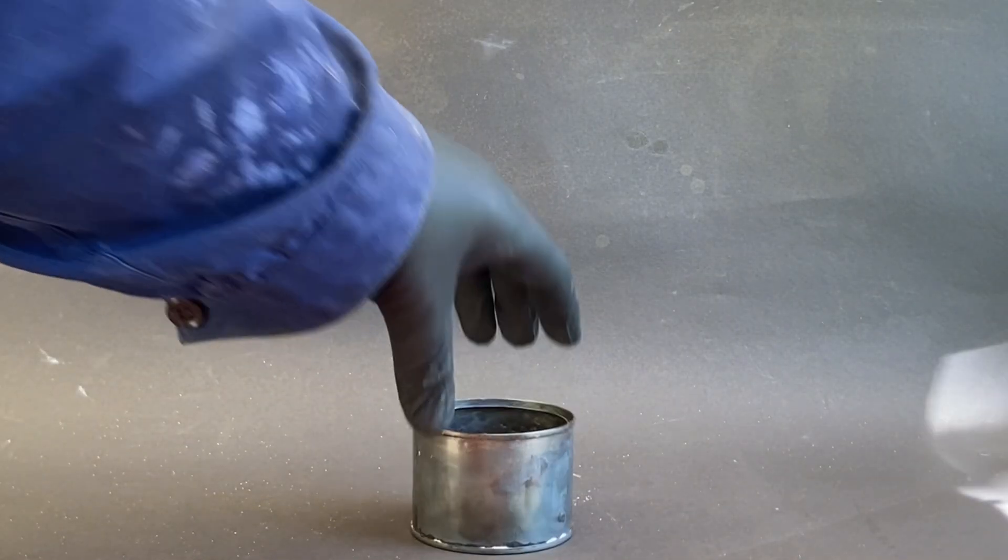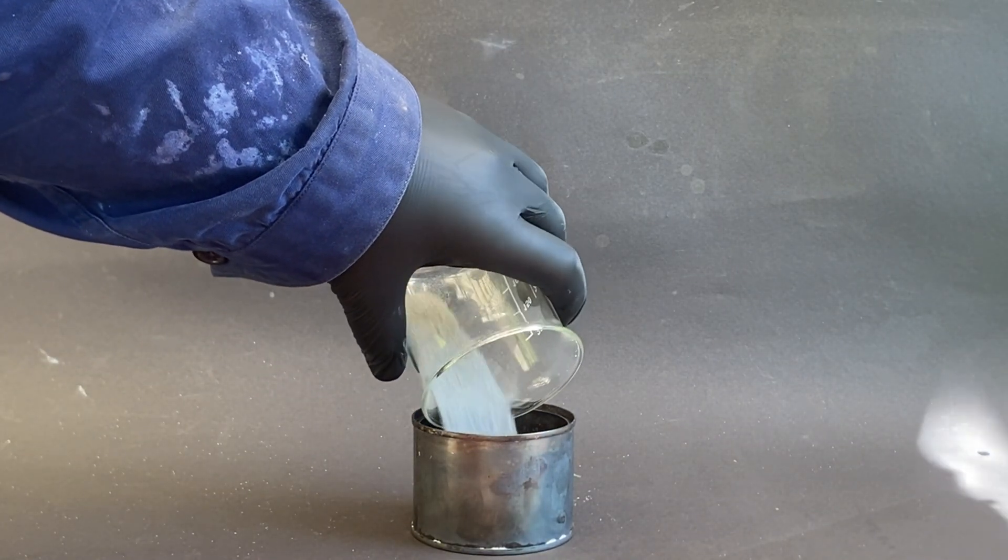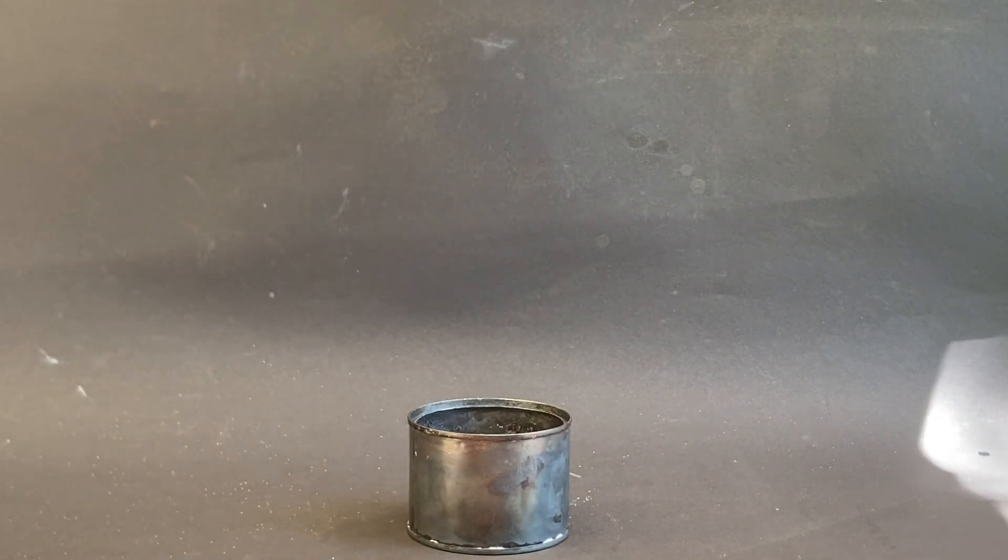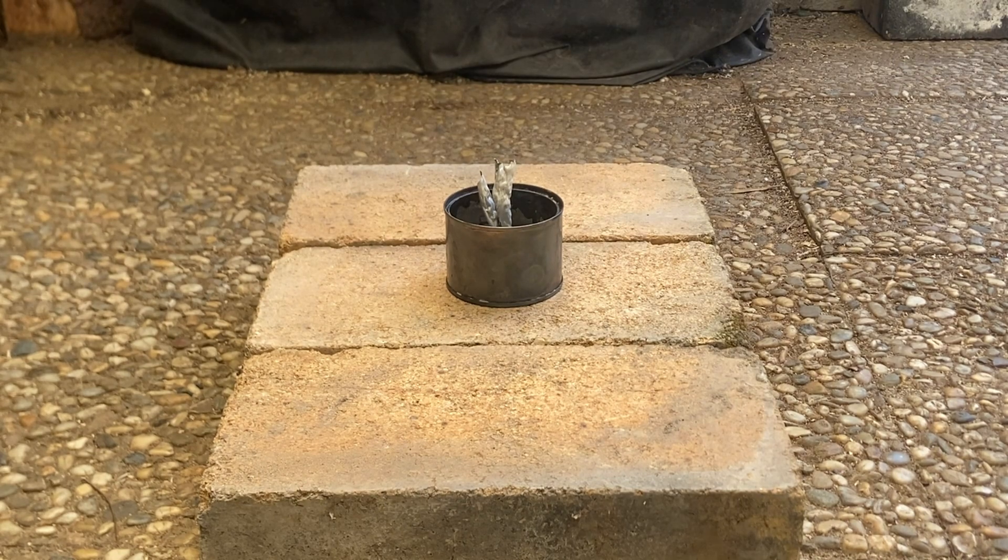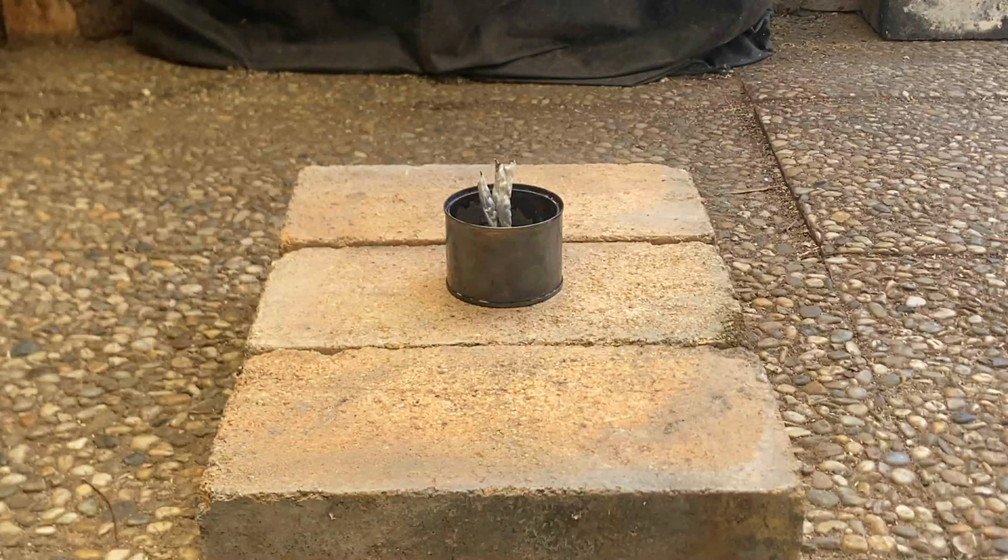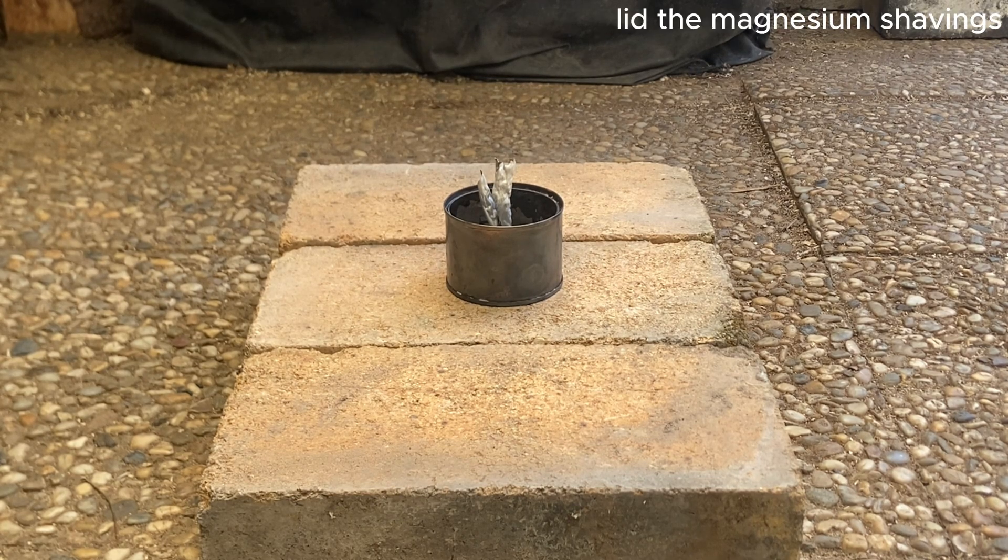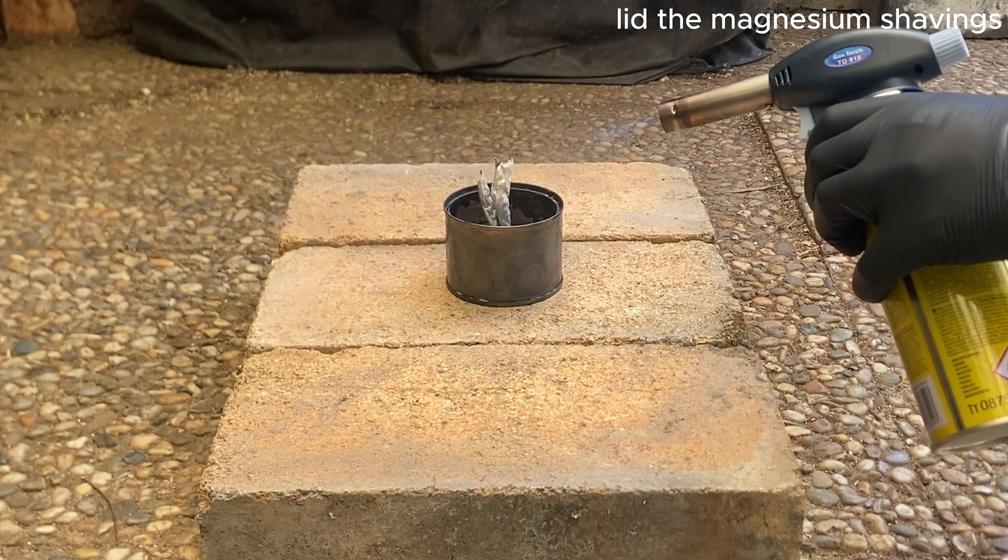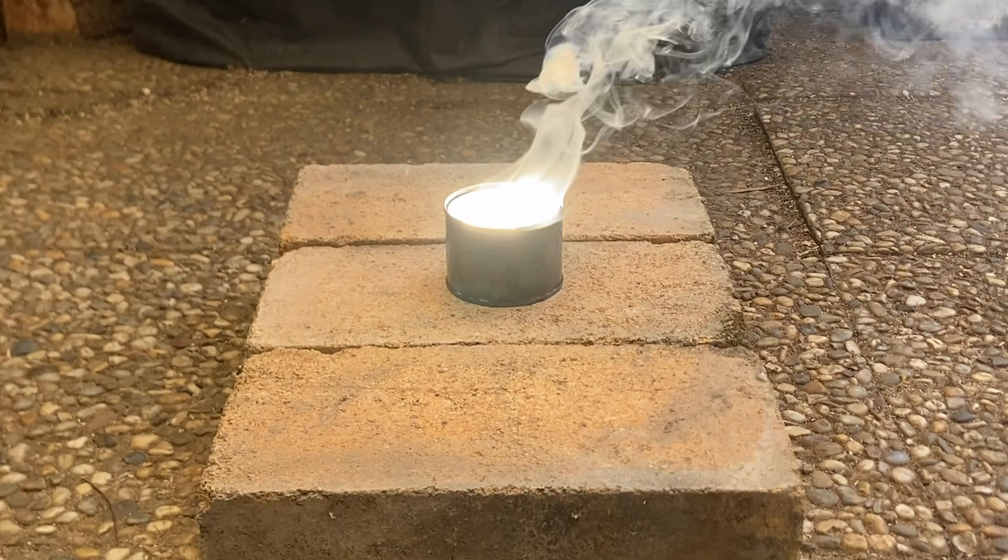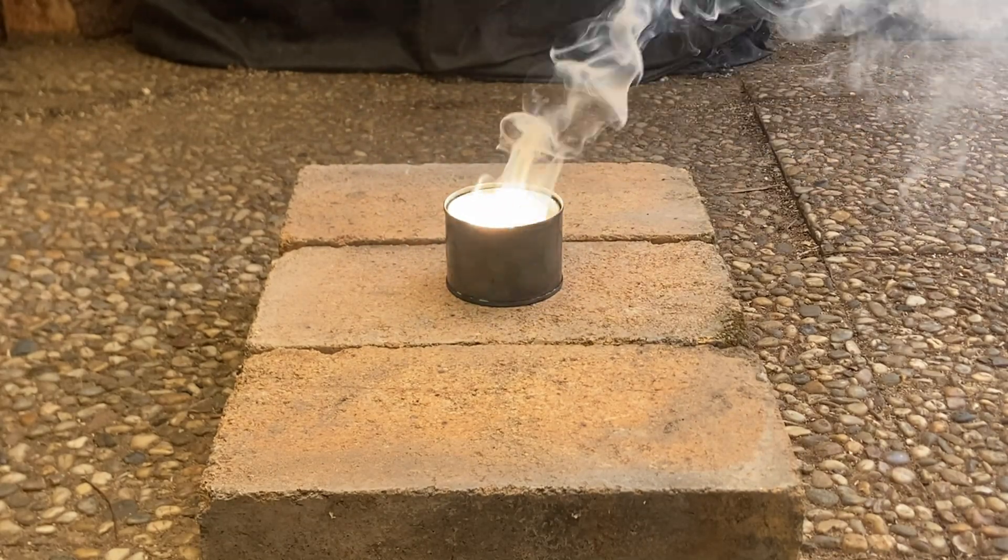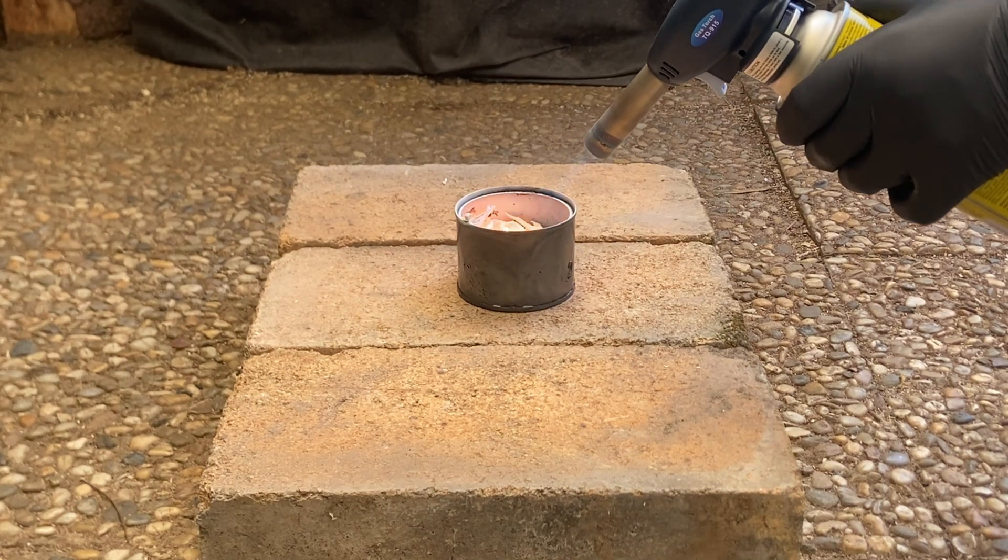Next I took the steel can from the previous reaction and filled it with the boron oxide magnesium mix. Afterwards I put few magnesium shavings into the mix and lit them. This didn't work, so I just heated the can until something happened.